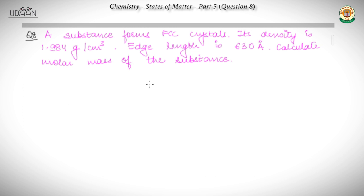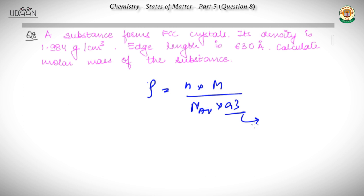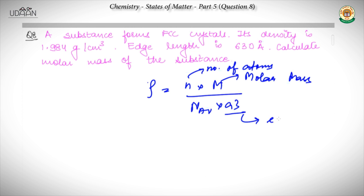We know the density formula is N into capital M divided by Avogadro's number into A cube, where A is the edge length, M is the molar mass, N is the number of atoms, and N_AV is Avogadro's number.